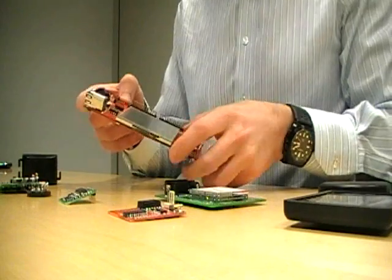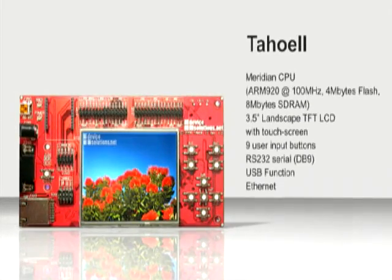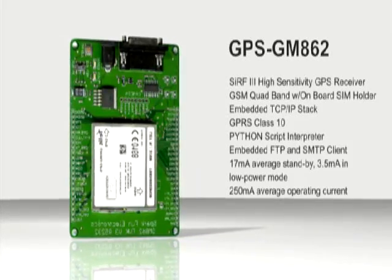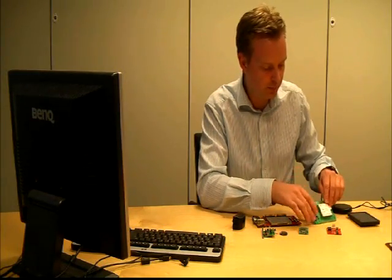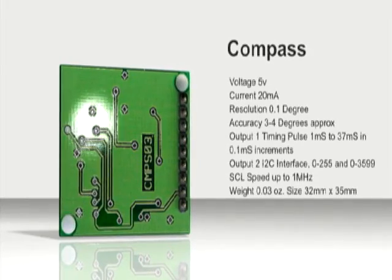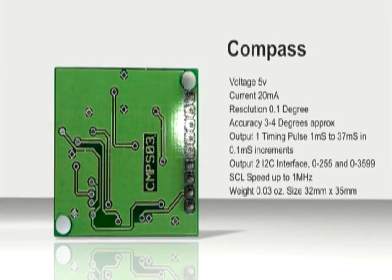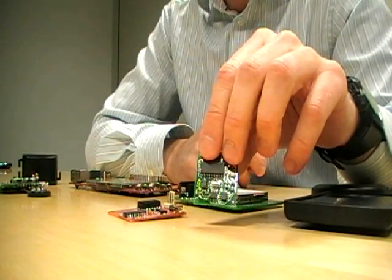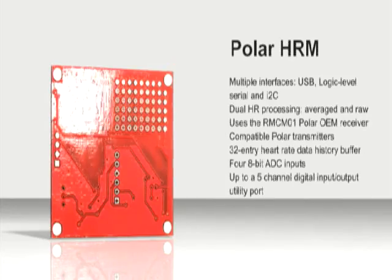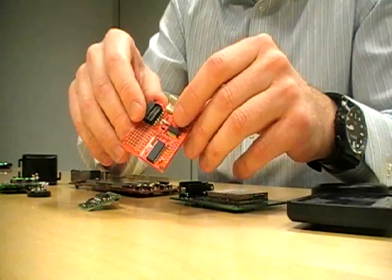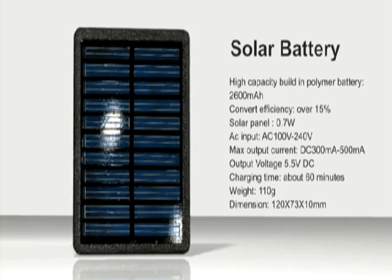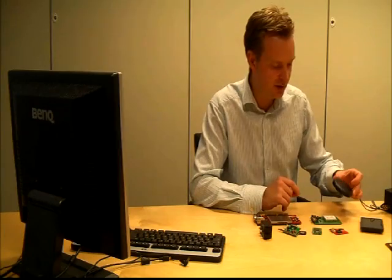We are all familiar with the Tahoe 2, which is the one I got for the contest. The GPS/GSM unit is the one sending status information from the device to a central server and also receiving new virtual boundaries. We also have the compass, which will switch off feedback from the feedback device immediately when the animal turns in the right direction. The heart rate monitor measures the heart rate of the animal. On my prototype, it's all powered by a battery with a solar panel, and there is a dual antenna for the GPS and GSM.